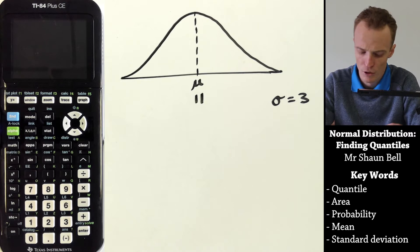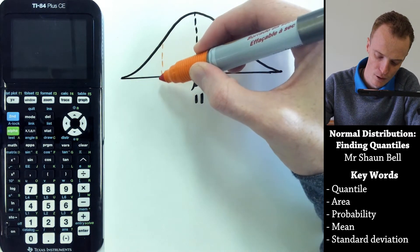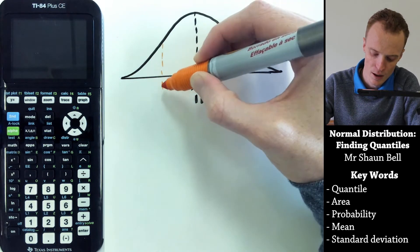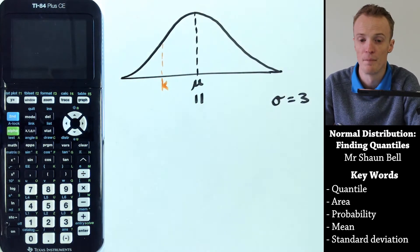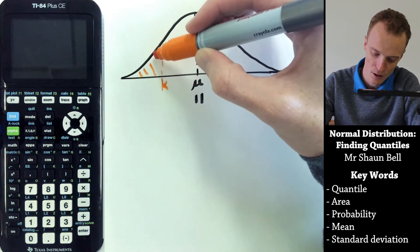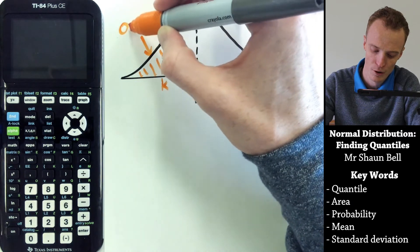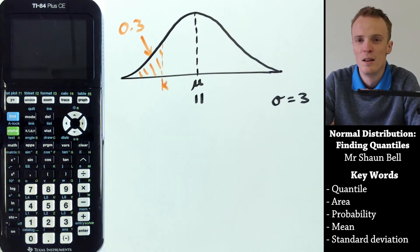Essentially, we're trying to find this value somewhere in here that we're going to call K, where we know that the area below K is 30% or 0.3.